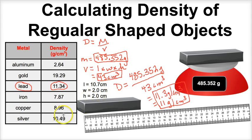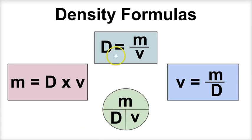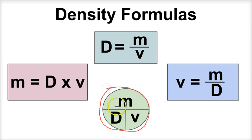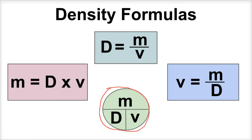Now let's take a look at a few word problems. The formulas are: density equals mass over volume, mass equals density times volume, and volume equals mass over density. If you can't remember all of those, just memorize this: density is mass over volume, volume is mass over density, and mass is density times volume. Let's apply these three formulas to three different word problems.